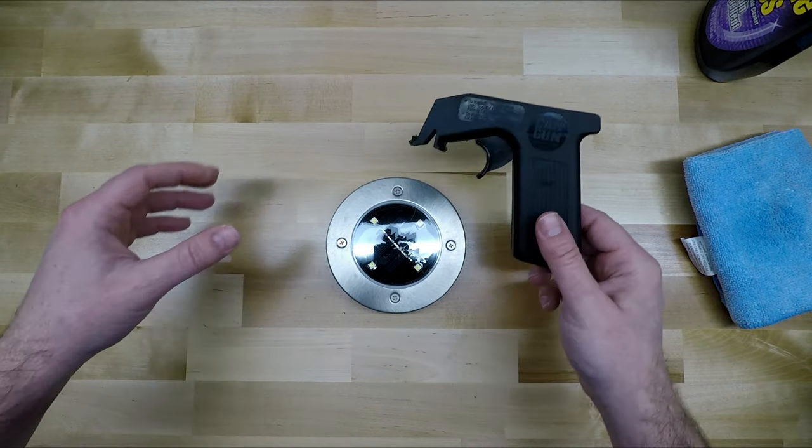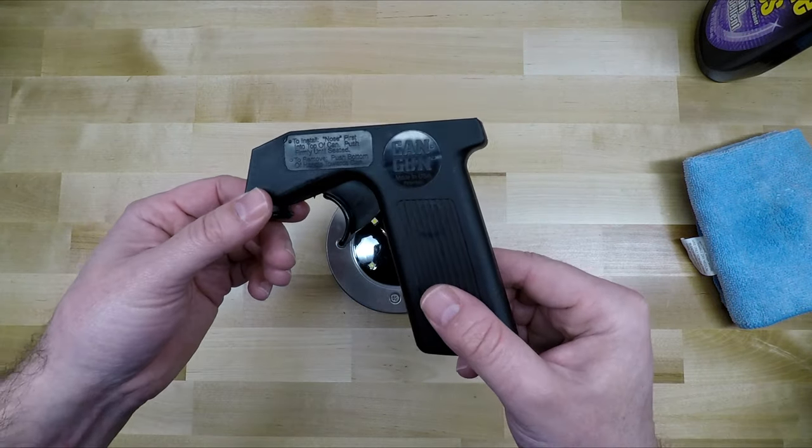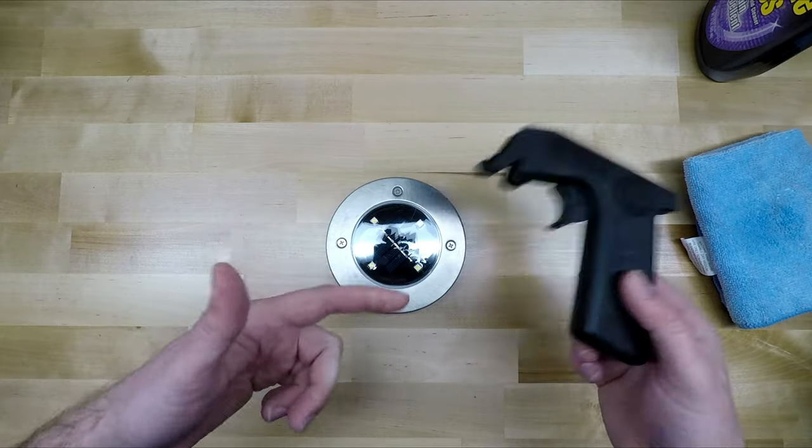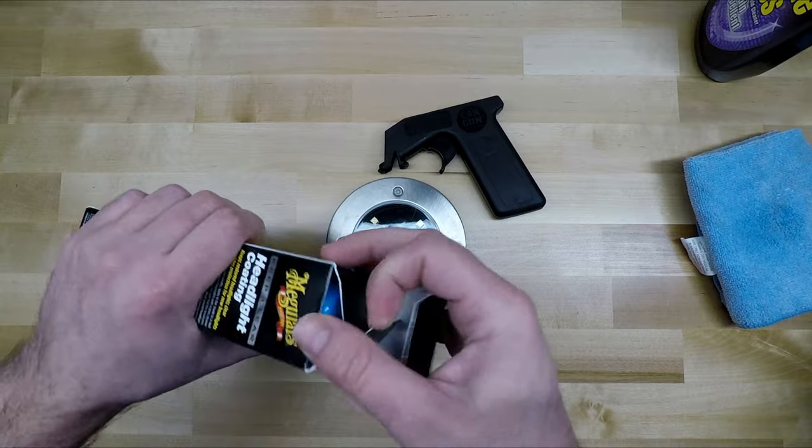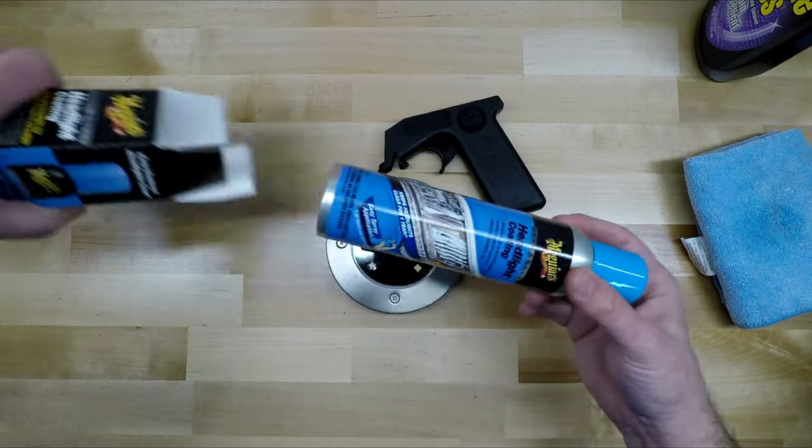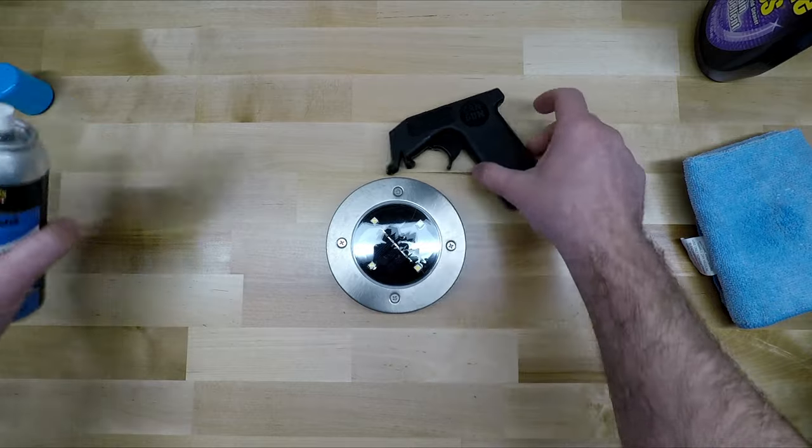And then something else I'm going to use is something called a can gun. And I'm going to put links to just about everything you've seen here in the description in case you want to pick it up from Amazon. This makes just about anything that you're spraying really easy.